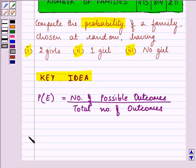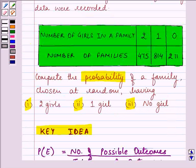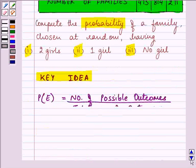Let us proceed with our solution. First of all, we need to find out for 2 girls. The number of families having 2 girls are 475 out of the total families. So first we will be finding out the total number of families.